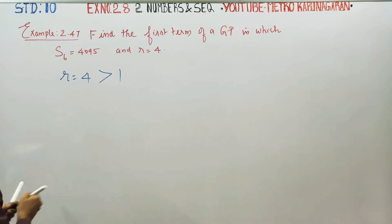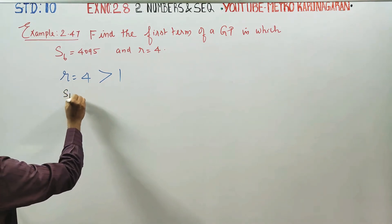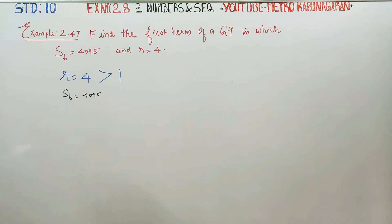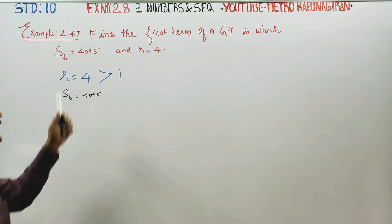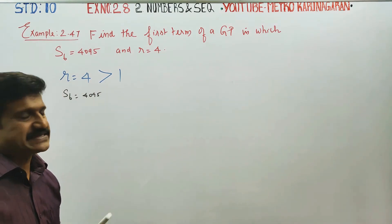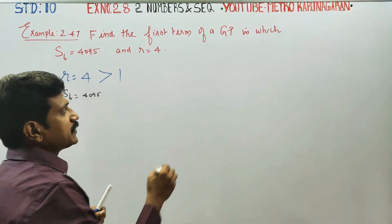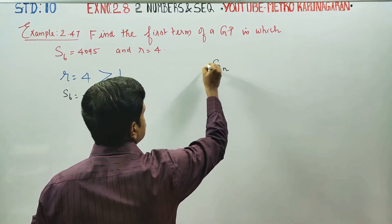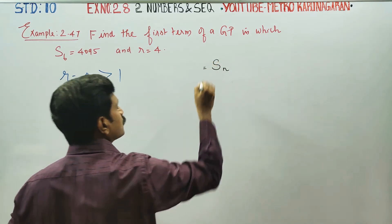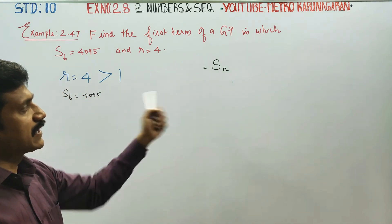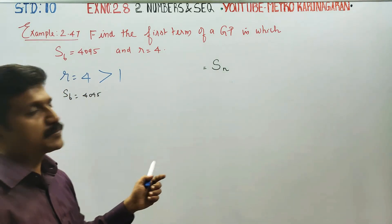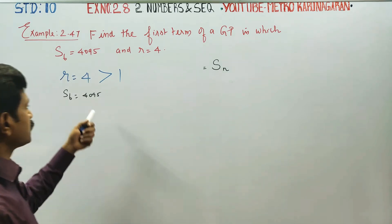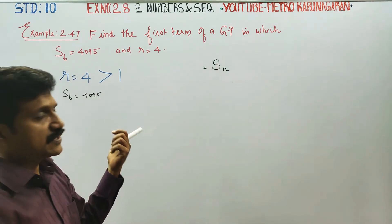Then another information that we have got: S6 is equal to 4095. Now I am going to say the S-N formula. S-N is equal to S-N.